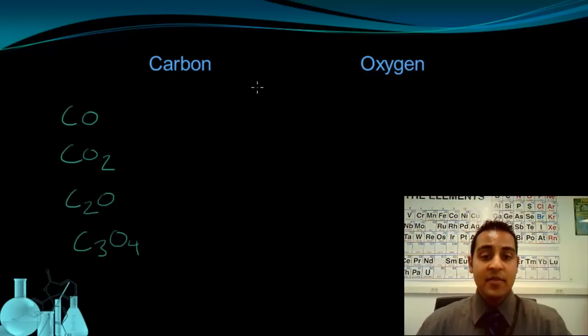Now we can't just name it carbon oxide like we did for ionic compounds because that's ambiguous. We don't know which of these carbon oxide applies to. So this is not the way to name covalent or molecular compounds.